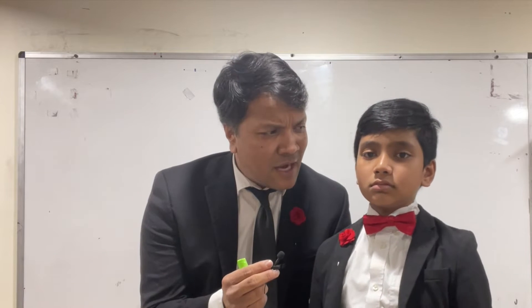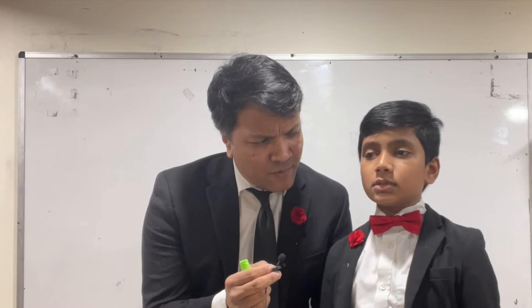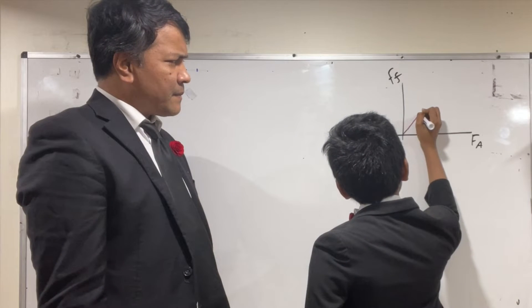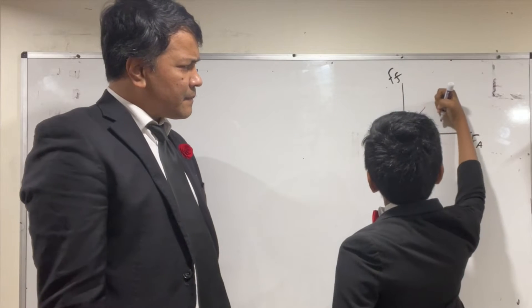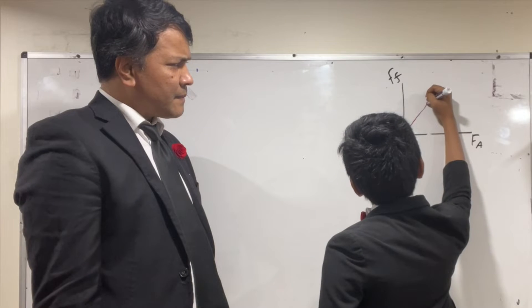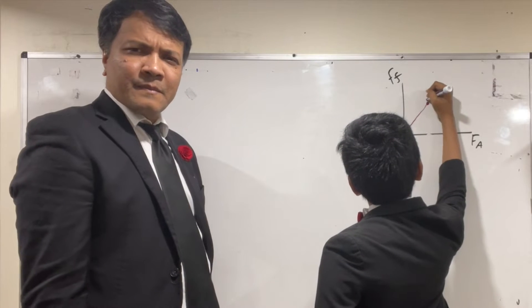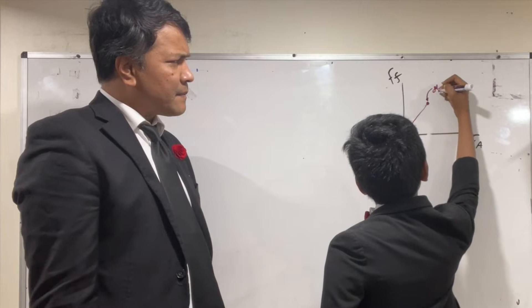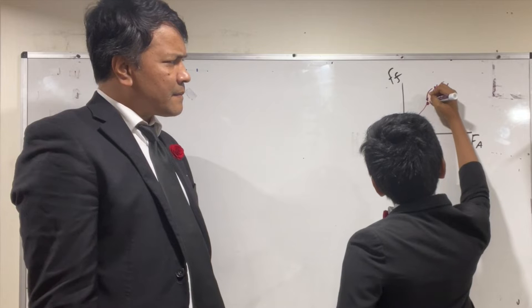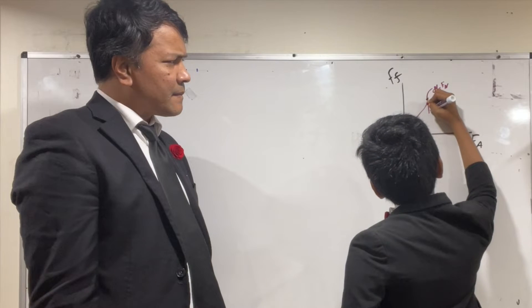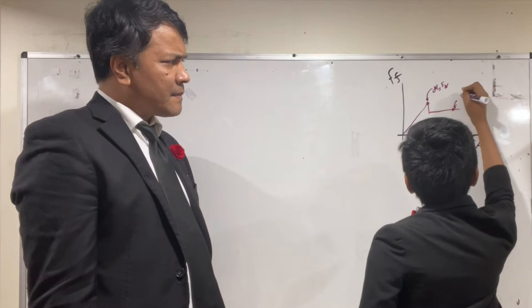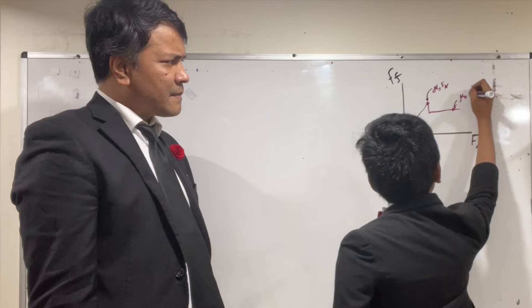The force of friction drops down and then stays constant as you move the object. As you apply more force the frictional force rises — it is actually equivalent to the applied force. But then eventually it reaches this maximum threshold, which is equivalent to the coefficient of static friction times fn. Once it reaches that, it lowers immediately, then stays at a constant value equivalent to the coefficient of kinetic friction times the normal force.